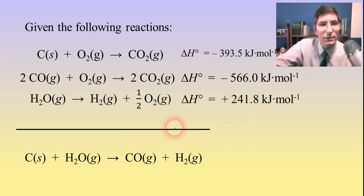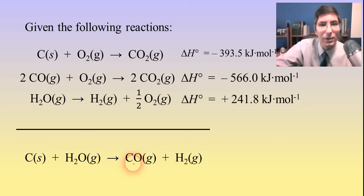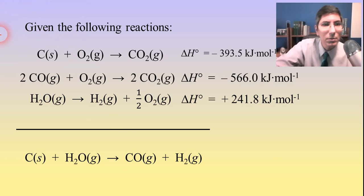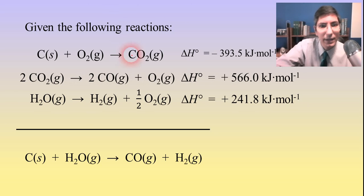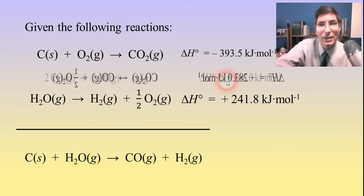H₂ looks good — it needs to be on the right side with a coefficient of 1, and it does have that. Carbon monoxide needs to be on the right side, but the only place CO appears in the individual reactions is number 2, where it's on the wrong side — the left. So I'm going to flip reaction number 2, which changes its sign from negative to positive. Carbon monoxide also needs a coefficient of 1, but it has a coefficient of 2, so I'll cut this reaction in half, multiplying each coefficient by one half, which also divides delta H by 2.